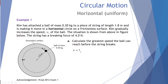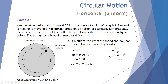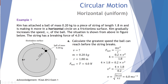We're finding the maximum velocity. The mass is 0.2 kg, the radius is 1.8 meters, and the net force when the string breaks is four newtons. Using F_net = mv²/r: four equals 0.2 × v² / 1.8. Rearranging: 4 × 1.8 = 0.2 × v², so v² = (4 × 1.8) / 0.2. Taking the square root gives v = 6 meters per second. That is the maximum speed this ball can travel before the string breaks.